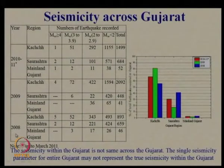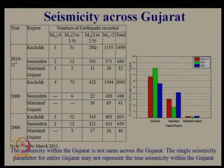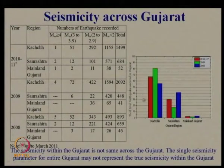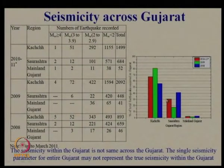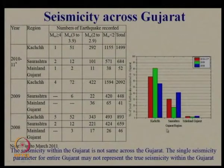This shows typical values — for 2008 and 2009, so many earthquakes occurred with their magnitude scalings mentioned. This automatically shows the Kach region in zone 5 is experiencing more earthquakes than the other two regions in zones 4 and 3. Hence, considering a single seismicity parameter for entire Gujarat is not justifiable; we should do region-specific or area-specific studies.